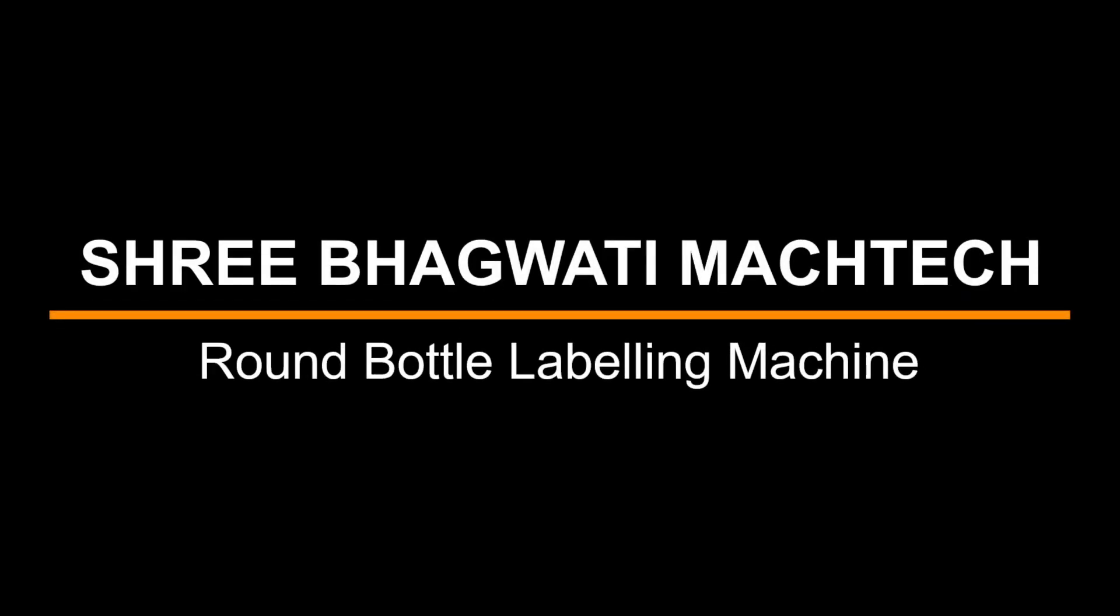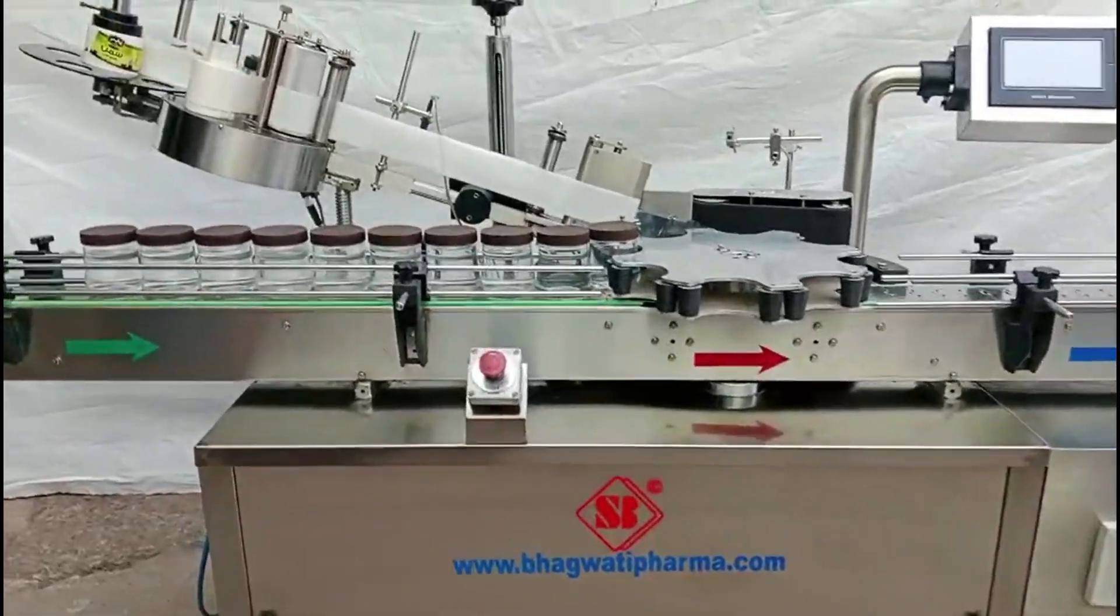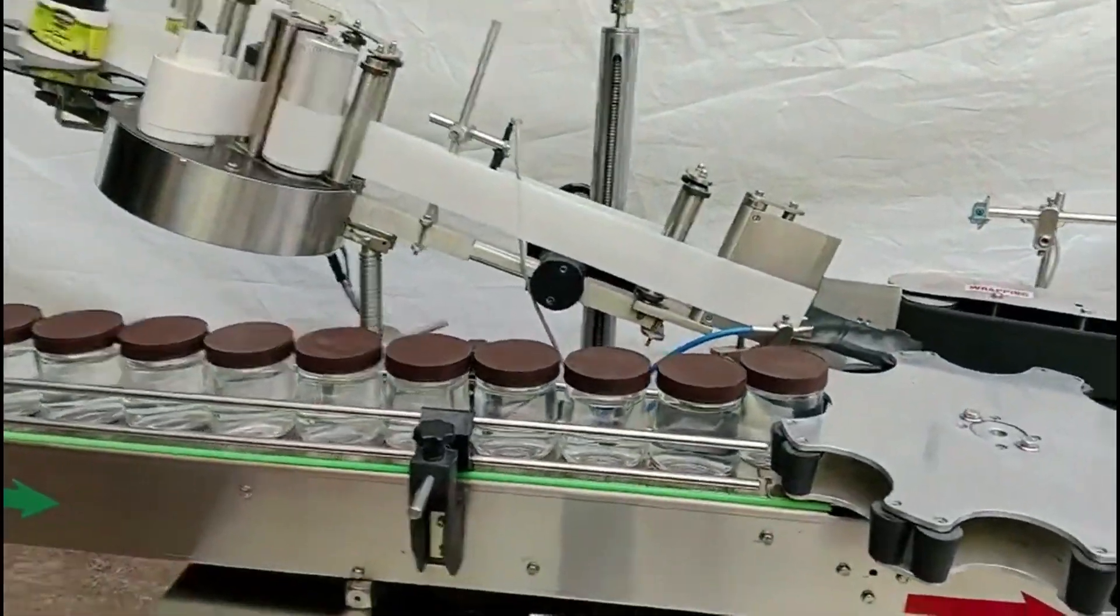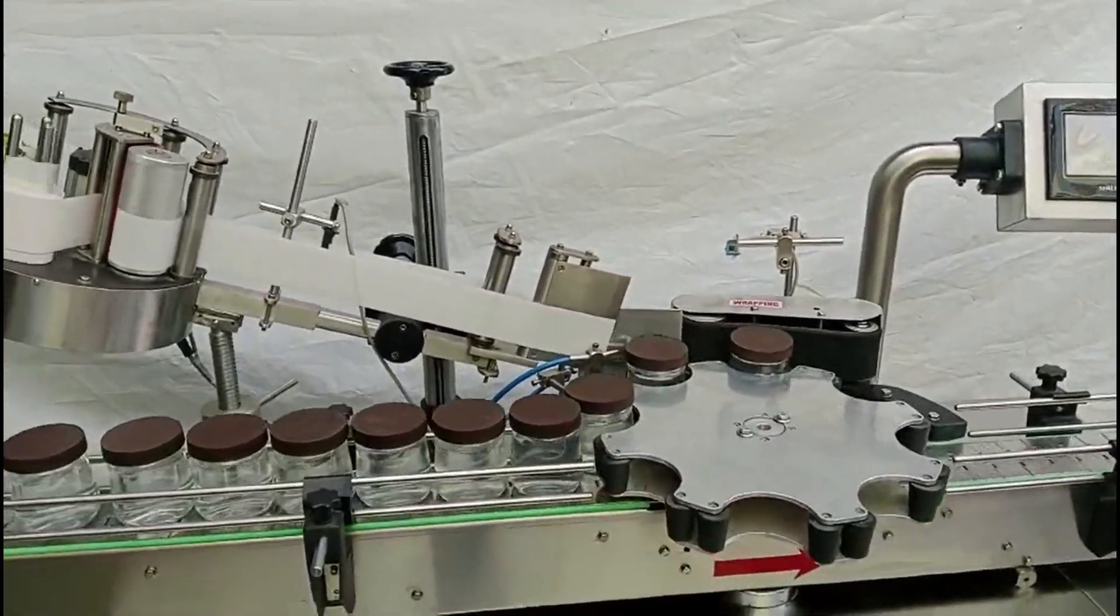Sri Bhagwati presents Round Bottle Labeling Machine. A round bottle labeling machine is a sophisticated piece of packaging equipment engineered to automate the application of labels onto cylindrical or round containers.